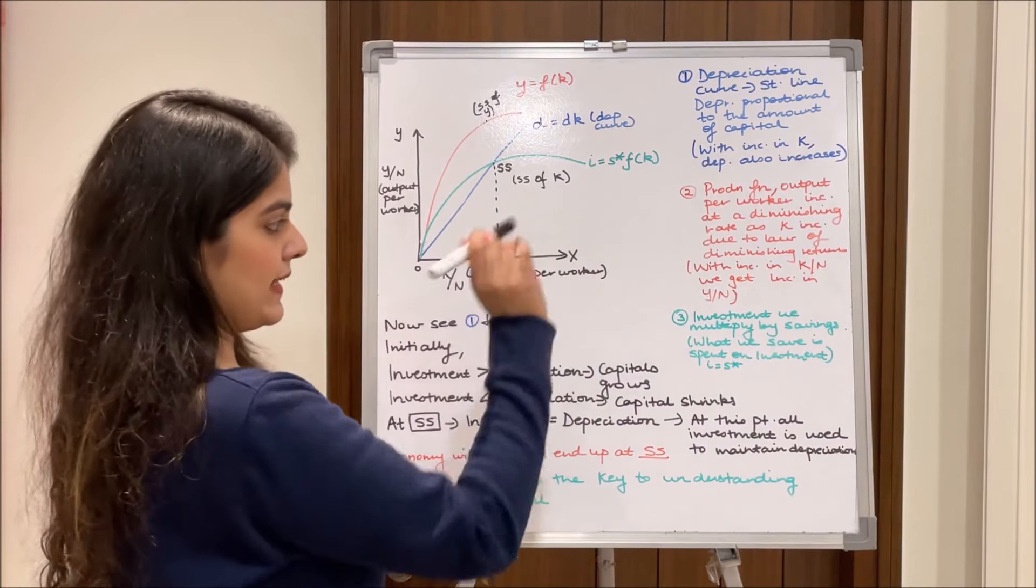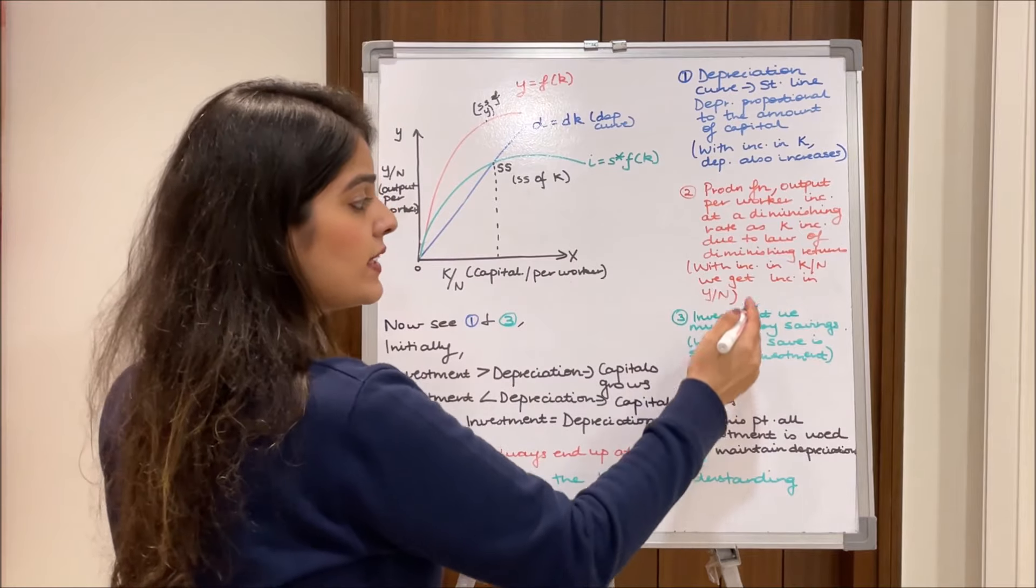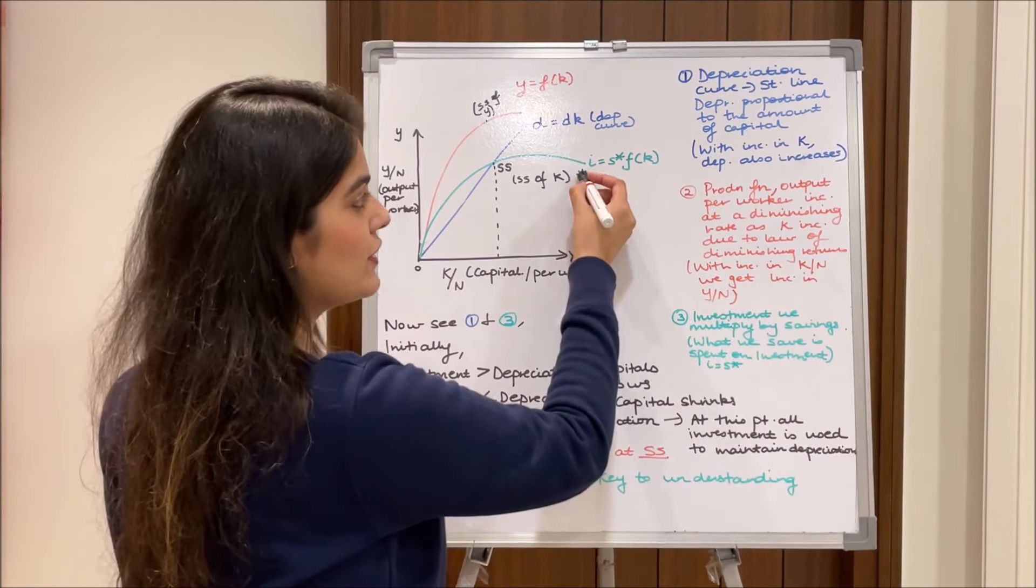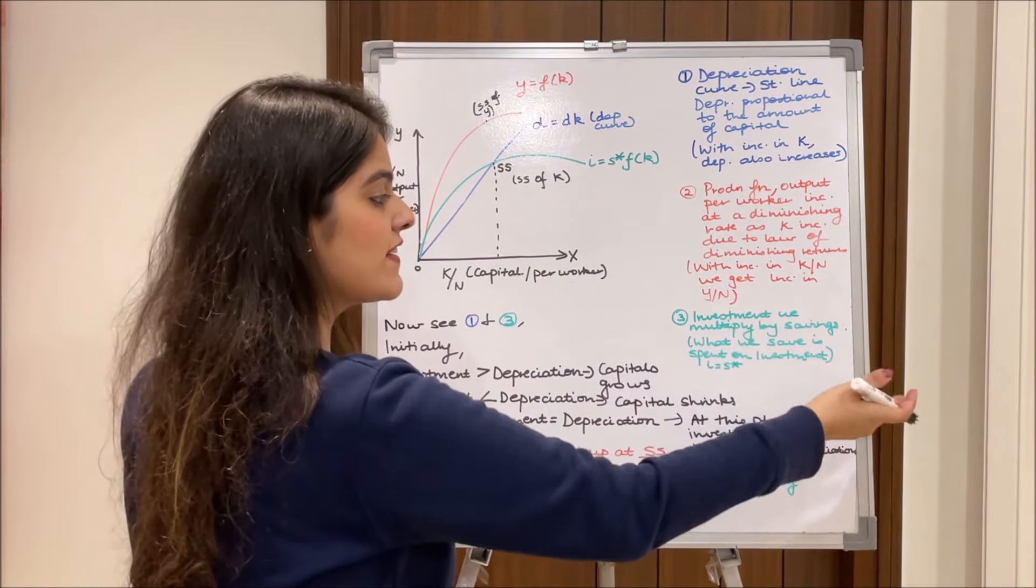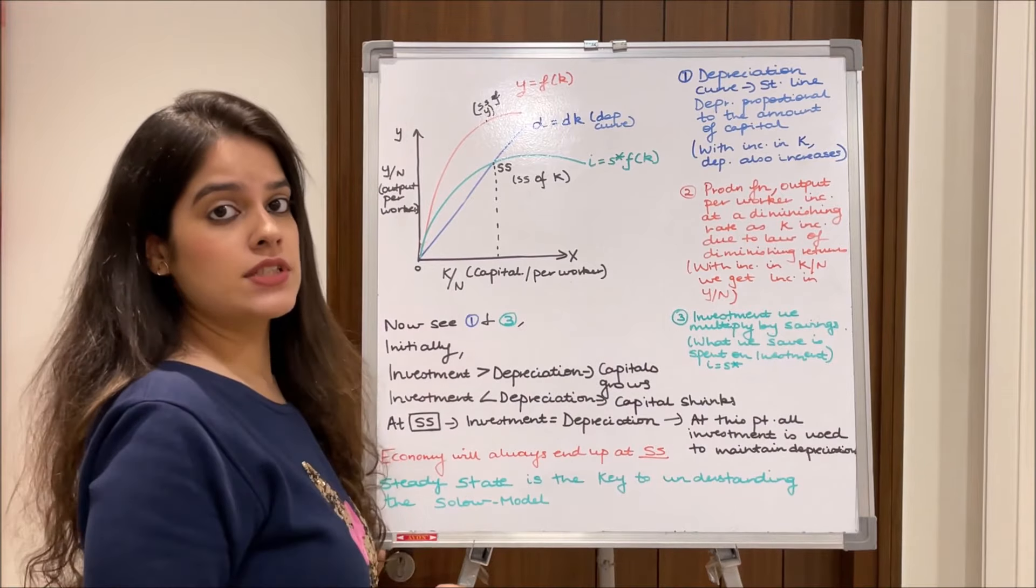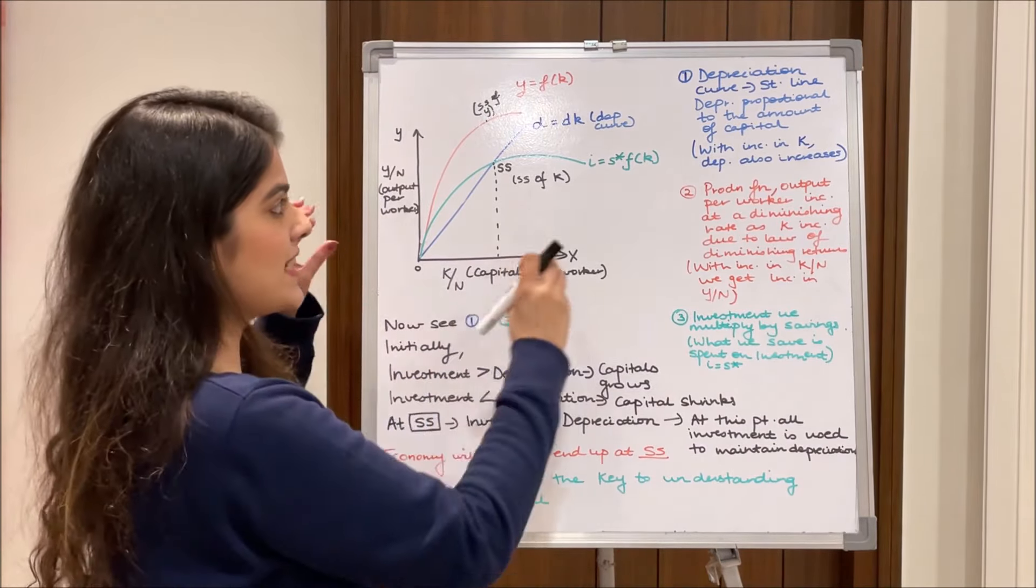Thirdly moving to the green line which is our investment line. So we know that investment we multiply by savings, that is why I have written I equals S*y. So what we save is spent on investment, isn't that obvious? Whatever we have as savings, only that we invest. So these are basically the three lines.